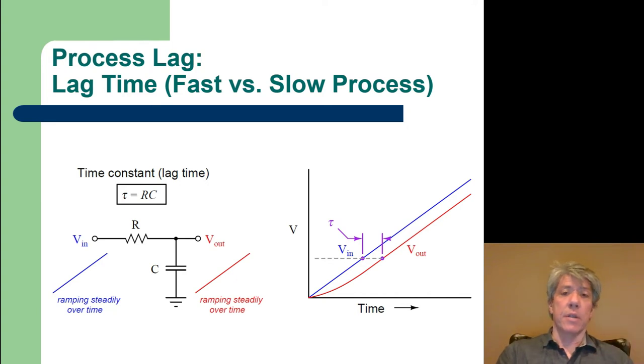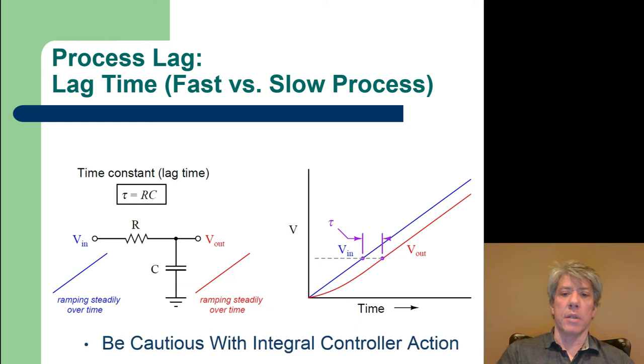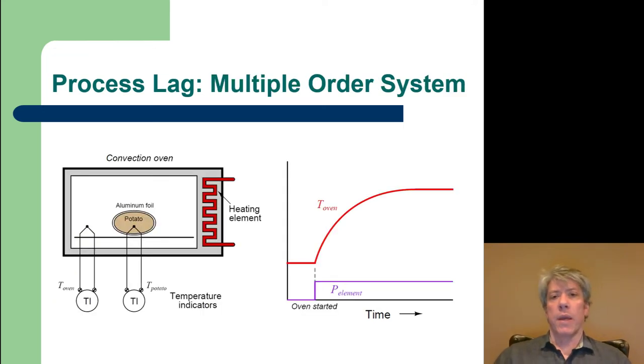You can actually do this same kind of experiment with any process that has lag. You could input a ramp change instead of a step change, monitor the output, and wait until the two are level with each other, or notice how much time it takes for one to respond and measure the time constant that way. But with any type of process that has lag, you have to be careful with integral action because integral controller action will tend to cause oscillation. So you just have to not crank it up too far. You have to be careful and judicious with the aggressiveness of the integral action in the controller.